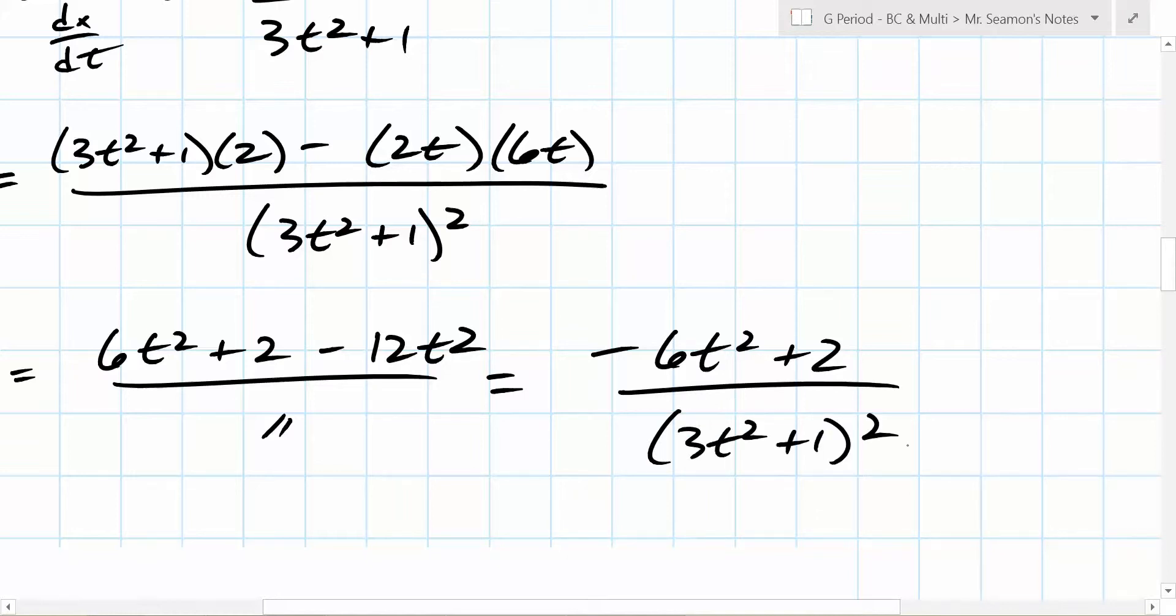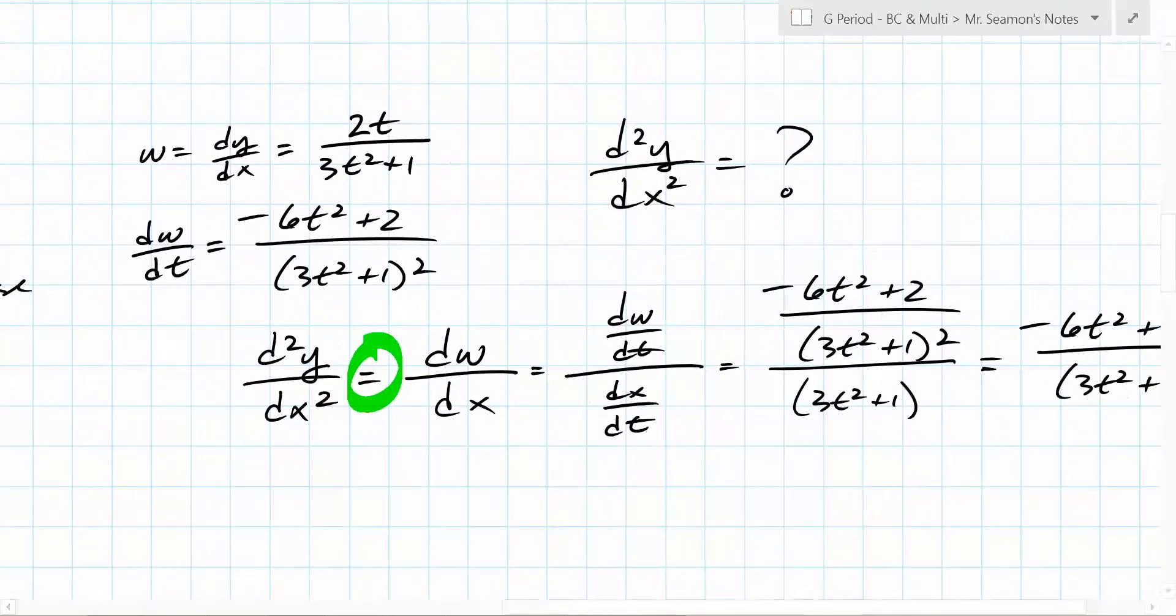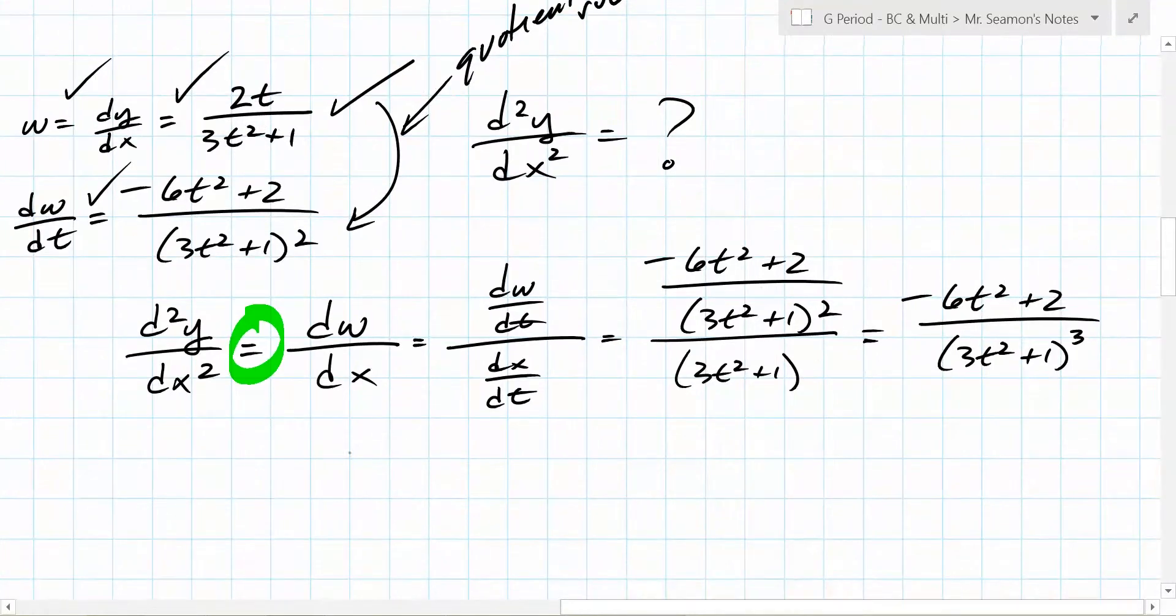Let's see if it cleans up. Hold on, let's just try it here. What do we got? 6t squared plus 2 minus what? 12t squared over the same thing. Nice. So what do we end up with? Negative 6t squared plus 2 over 3t squared plus 1 squared. It becomes cubed. Okay, so everything we just did right there, we needed to do this work. We needed this, because without that, we wouldn't be able to get this. What rule did we use right there? The quotient rule.